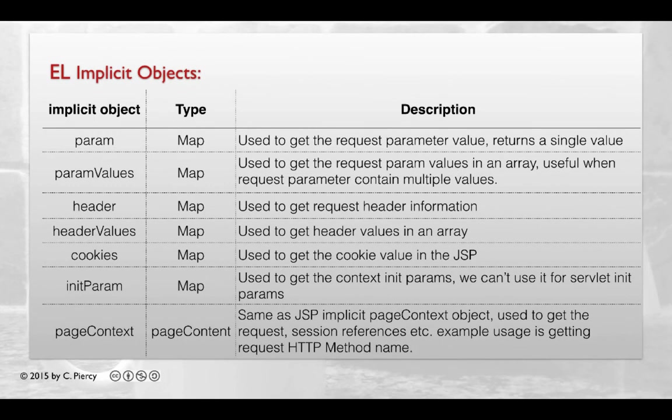In this table, we see about 7 or 8 implicit objects. Most of them use the data type map. Take a moment to look at each implicit object and read its description.